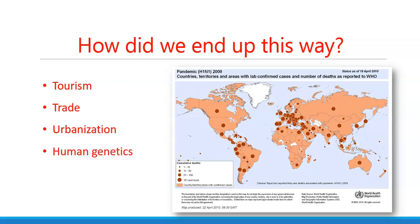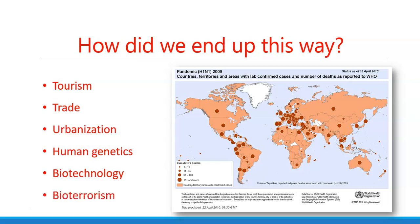In addition to this, human genetics and the susceptibility of certain human genotypes to certain pathogens is also an issue which must be considered in the context of biological risk management. Biotechnology and bioterrorism both add another dimension to biological risk management, as pathogens can be weaponized for applications in bioterrorism.